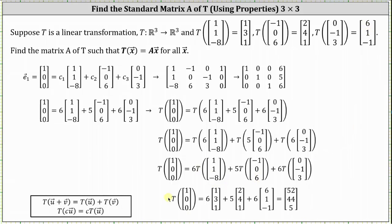So now we can find the transformation of the vector (1, 0, 0) by performing the scalar multiplication and then determining the sum. Six times one plus five times two plus six times six is 52. Six times three plus five times four plus six times one is 44. And six times one plus five times one plus six times negative one is positive five. So the transformation of (1, 0, 0) is the vector (52, 44, 5), which gives us the first column of matrix A.